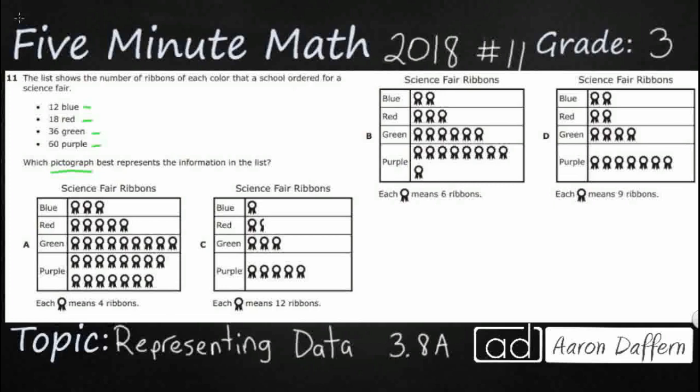A pictograph just uses pictures, in this case we're actually using ribbons as we see down here, and each ribbon represents a certain number and that's going to be very important for us because the key is going to be very important. So each little ribbon is going to equal a certain amount of ribbons, and that's going to be very important for us to figure out.